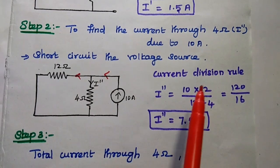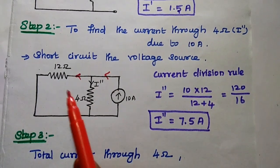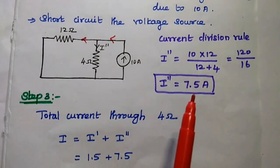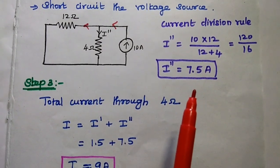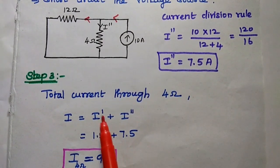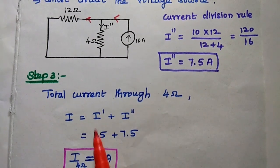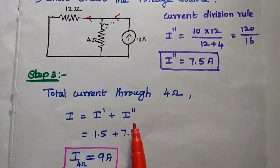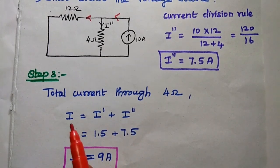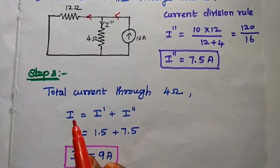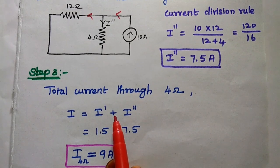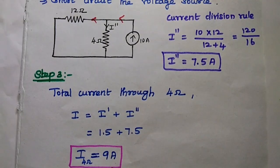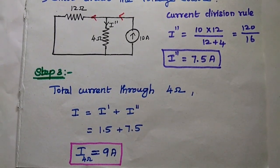In current division, we consider the opposite resistance value. The last step is to add the current through the 4 ohm resistor due to the 24 volt source and also the current source. That is, the current through 4 ohm I is equal to I dash plus I double dash. The answer is 9 ampere.